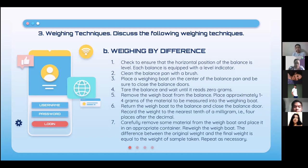Tear the balance and wait until it reads 0 grams. Remove the weighing boat from the balance and place approximately 1 to 4 grams of material into it. Return the weighing boat to the balance and close the balance door. Record the weight to the nearest tenth of a milligram, four places after the decimal. Carefully remove some material from the weighing boat and place it in an appropriate container, then reweigh. The difference between the original weight and the final weight equals the weight of the sample taken. Repeat as necessary.